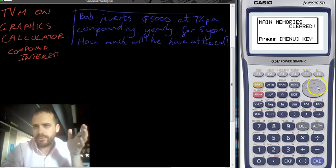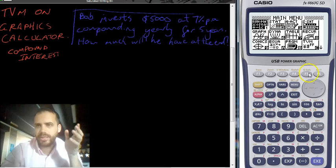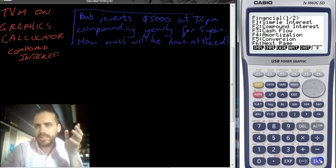Really straightforward here, we go into our menu option on our calculator, we go down to the TVM mode down here and we press enter. And then we choose F2 for compound interest, so we press the button here, F2.